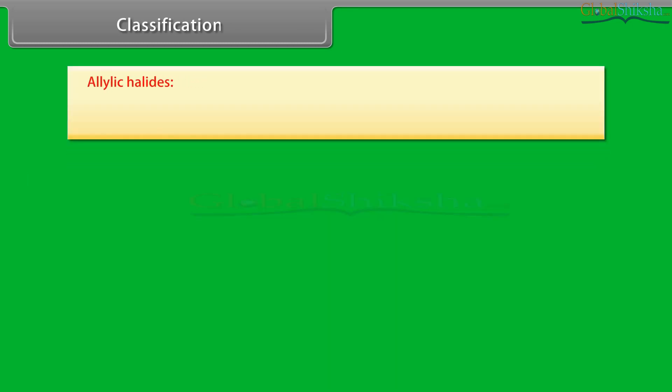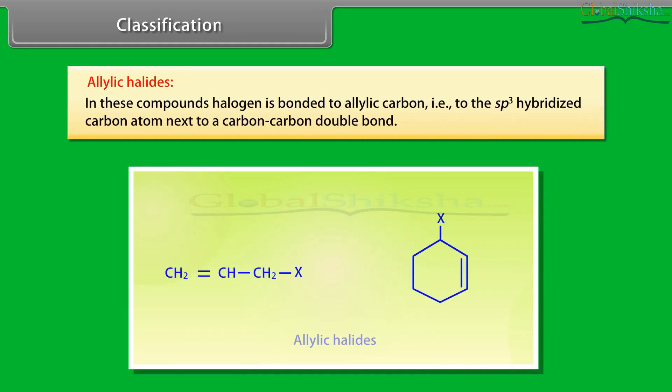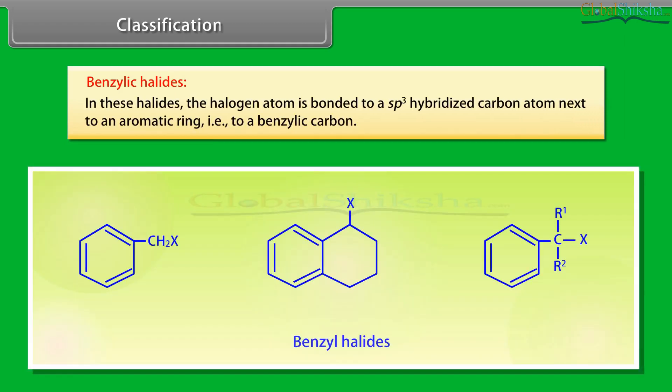Allylic halides: In these compounds, halogen is bonded to allylic compounds, that is to the sp3 hybridized carbon atom next to a carbon-carbon double bond. Benzylic halides: In these halides, the halogen atom is bonded to a sp3 hybridized carbon atom next to an aromatic ring, that is to a benzylic carbon.